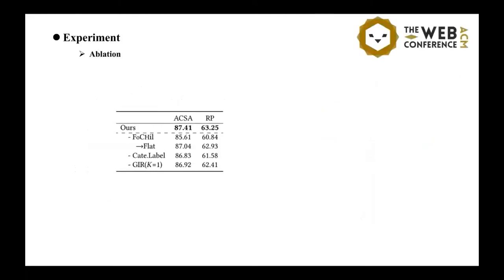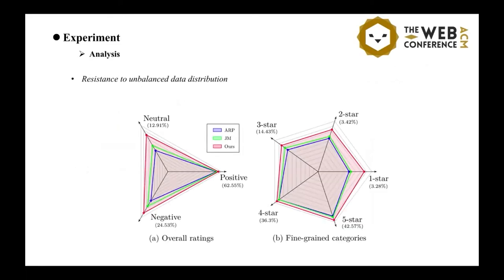Next, we perform an ablation study to examine each part of system itself, including the FoCHiI graph, the category label encoding, and the global iterative reasoning.